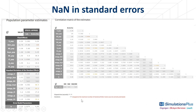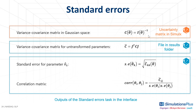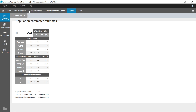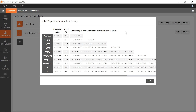NaN standard errors can be seen as very large standard errors. They indicate that the model is too complex or poorly identifiable. In addition to the results in the interface, the variance-covariance matrix is also outputted as a file in the results folder. When a Monolix project is exported into Simulix, it is the variance-covariance matrix in Gaussian space that corresponds to the uncertainty matrix shown in Simulix. It enables sampling of new population parameters in the Gaussian space to propagate the uncertainty on population parameters to the simulations, and the sampled values are then converted to the non-Gaussian space.